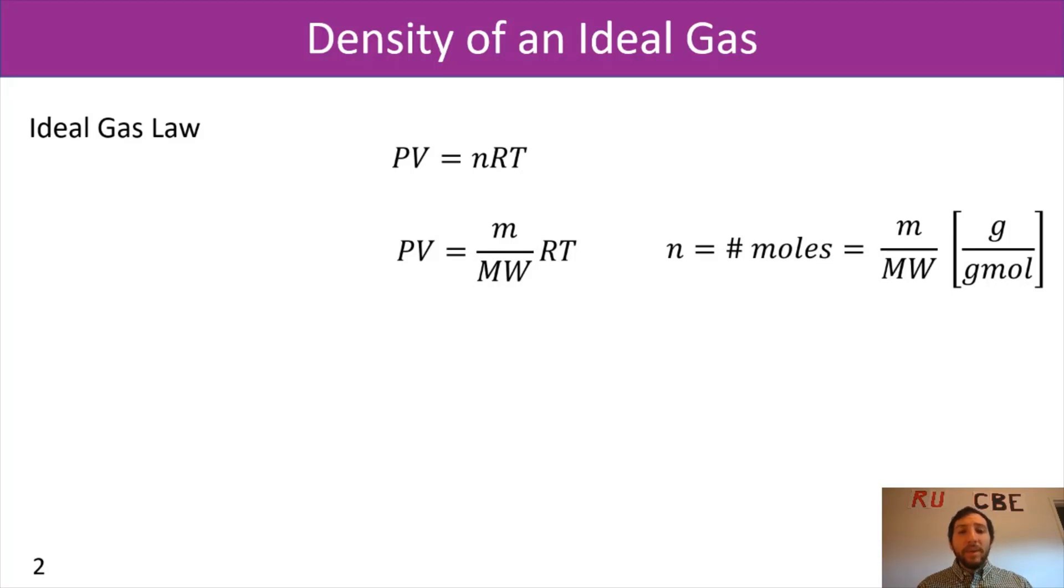What we can do is we can rearrange this equation to bring the volume over to the right-hand side, so we have mass over volume, and we'll bring molecular weight over to the left. So we have pressure times molecular weight equals our mass per volume times RT. In which case, we have our mass over volume that gives us our density. If we want to fully isolate and just have density on one side, we would have density equals RT divided by pressure times molecular weight.